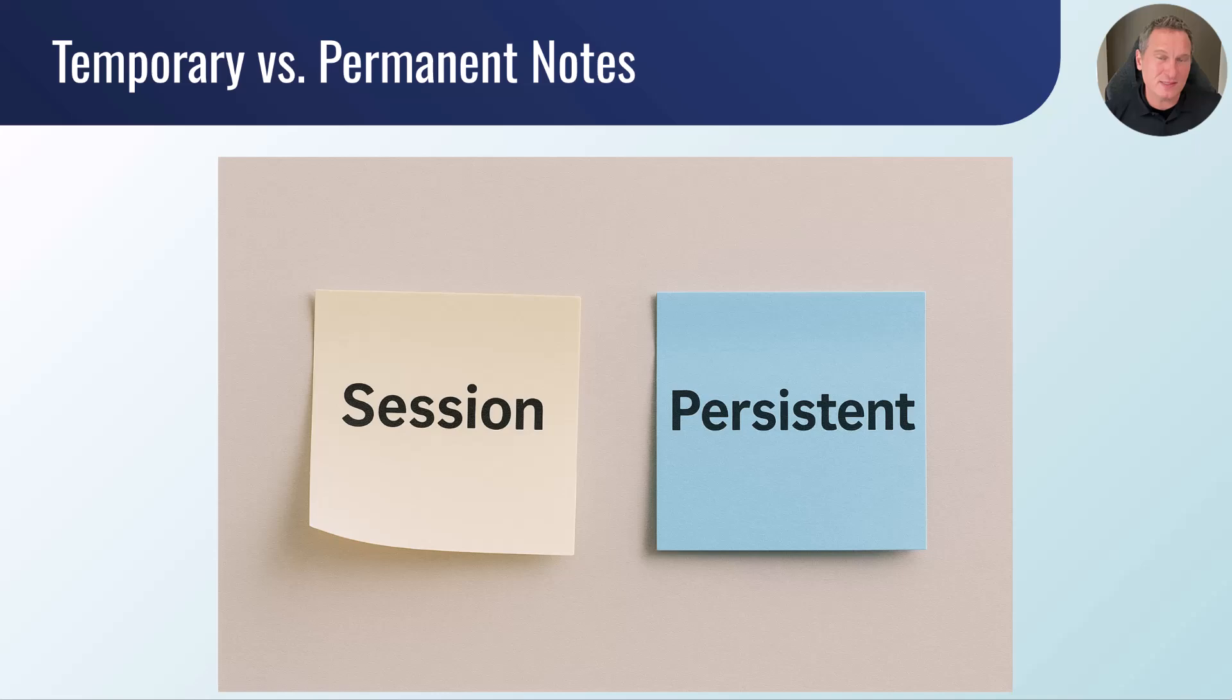Cookies also have different lifespans. Session cookies, those are temporary notes. They're like reminders that the website uses while you're actively on the site and they disappear as soon as you close your browser session. Think of them like short term memory. Now, persistent cookies, on the other hand, are like long term memory.